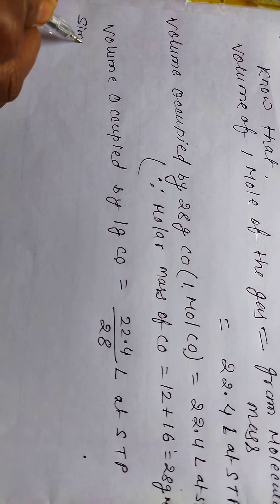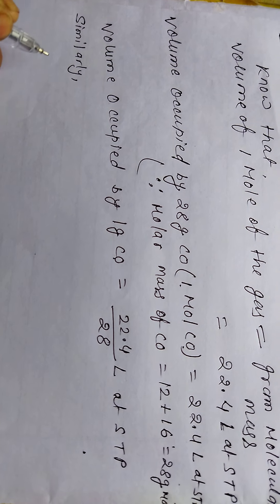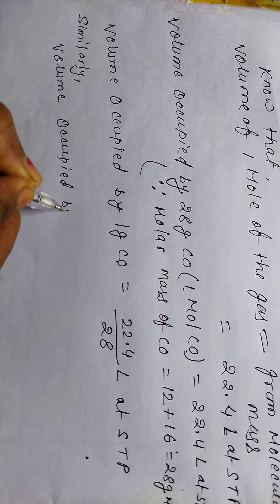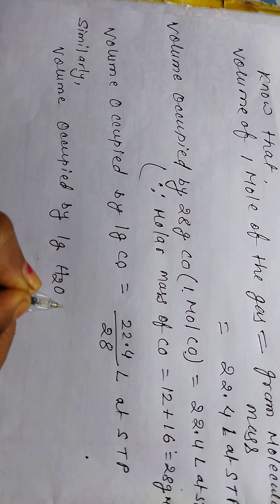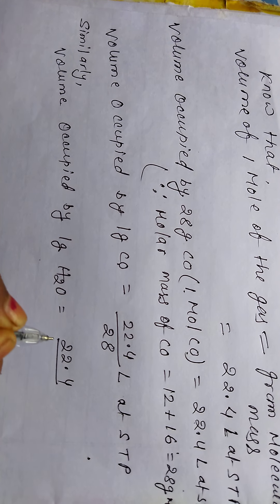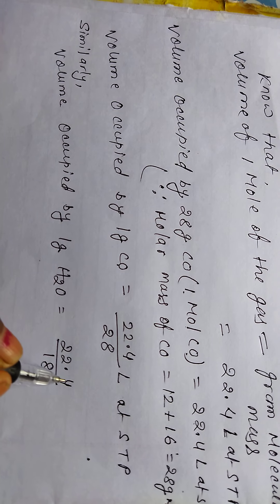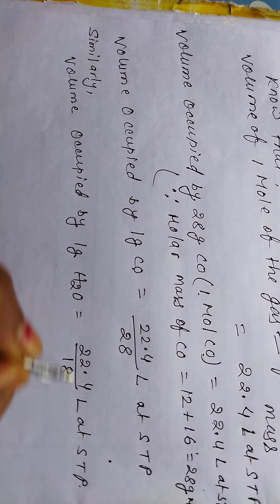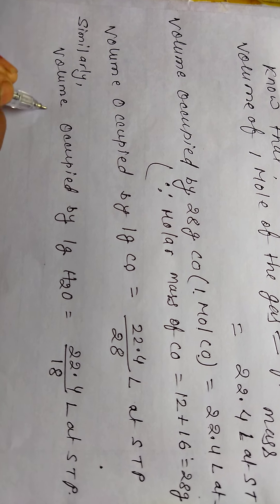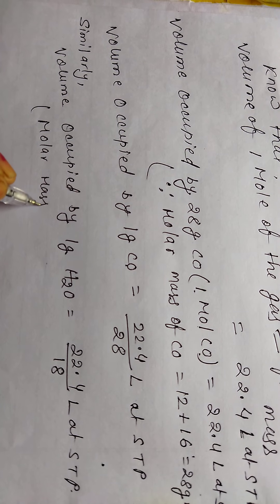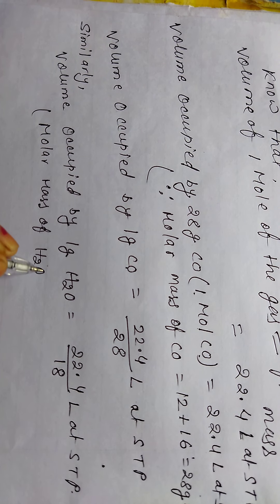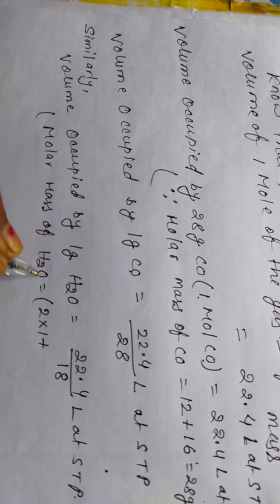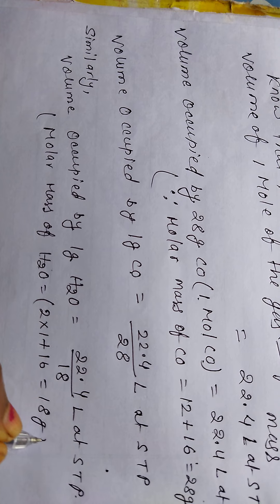Similarly, the volume occupied by 1 gram of H₂O = 22.4/18 liters at STP. The molar mass of H₂O is calculated as hydrogen 2×1 plus oxygen 16, giving 18 g/mol.